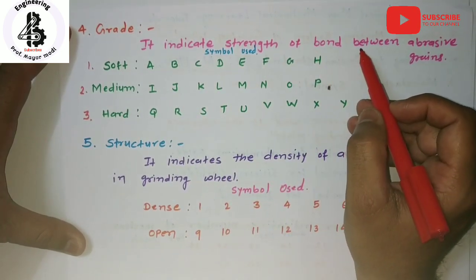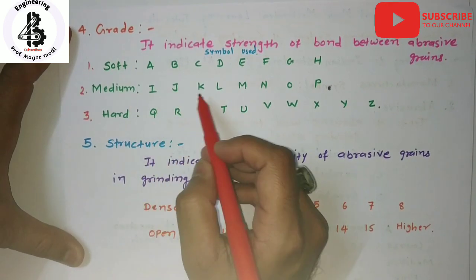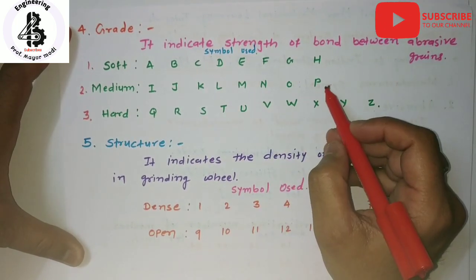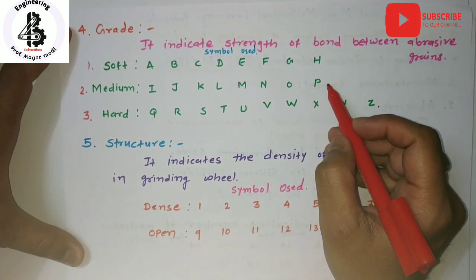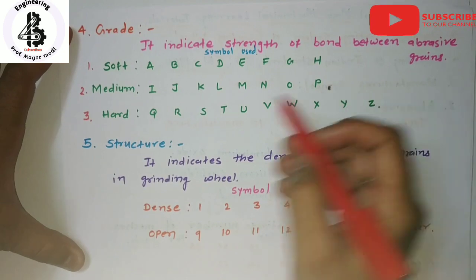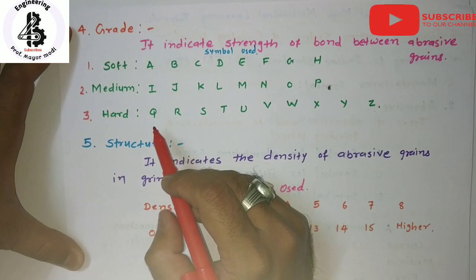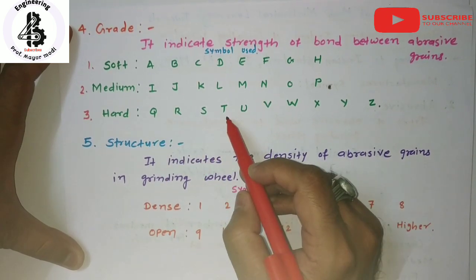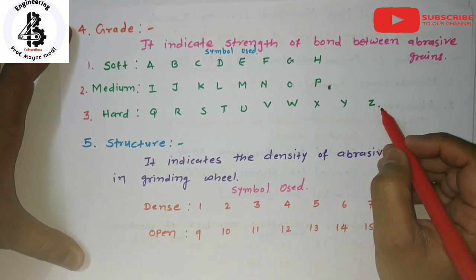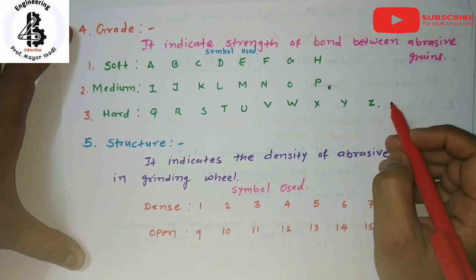If that will be the medium kind of grain size, the letters I, J, K, L, M, N, O, and P — so I to P is the category of medium strength of the grinding wheels for different sizes of abrasive grains. The third category is hard binder or hard strength, indicated by Q, R, S, T, U, V, W, X, Y, and Z — so Q to Z indicates the hard strength of the bond, making three different grades of grinding wheels.